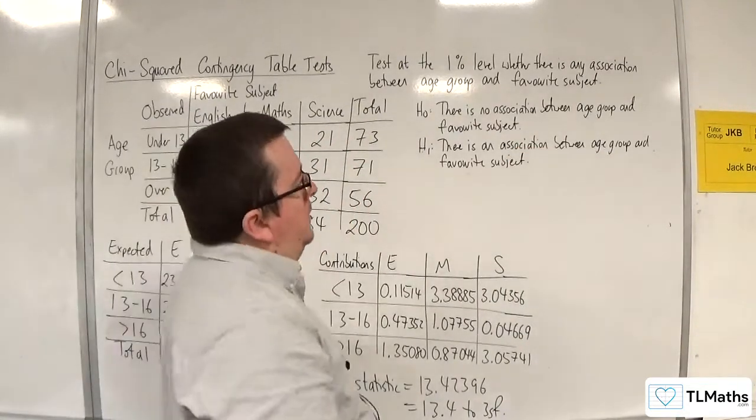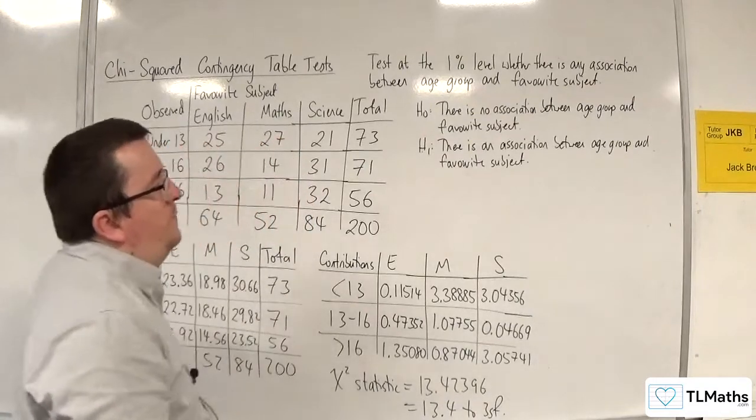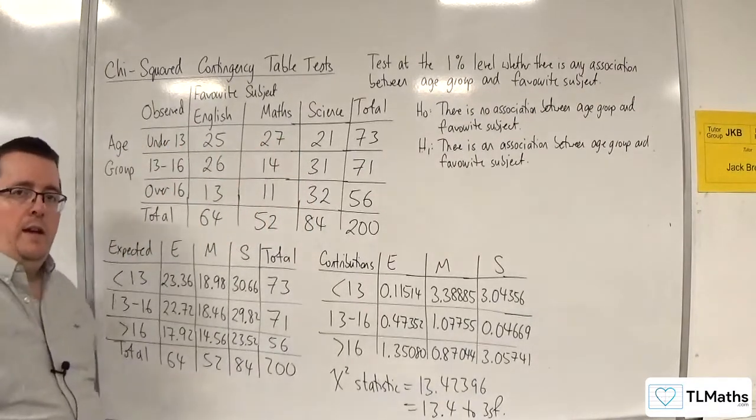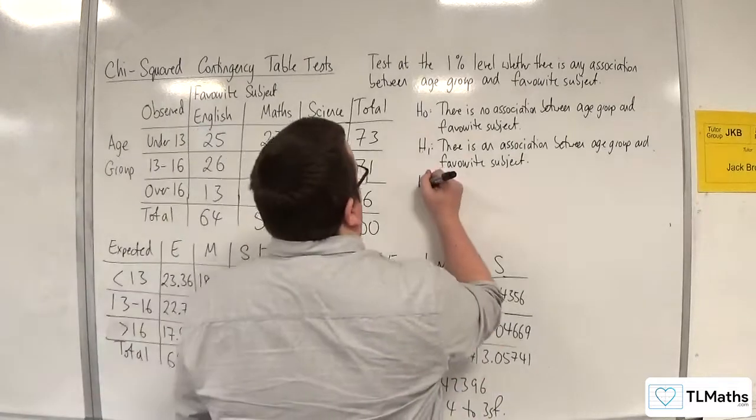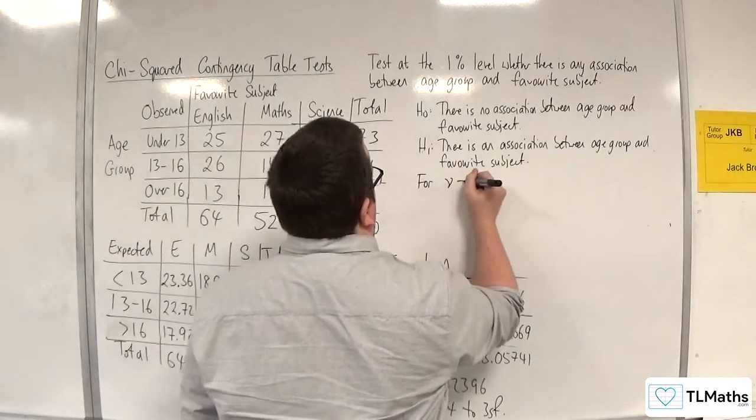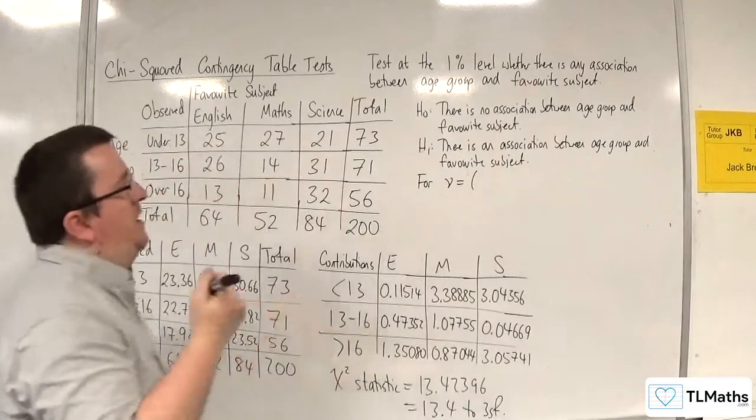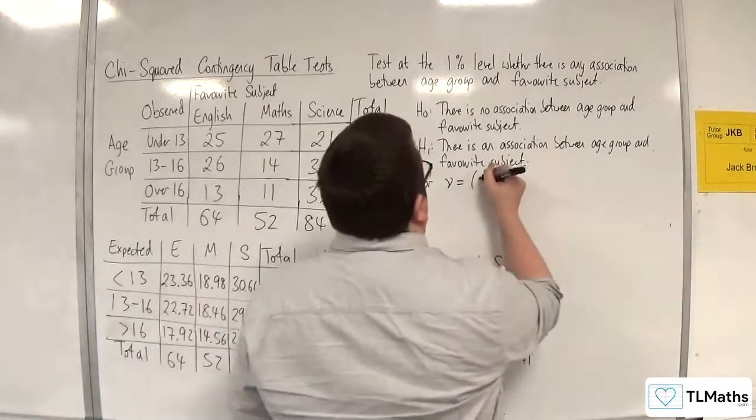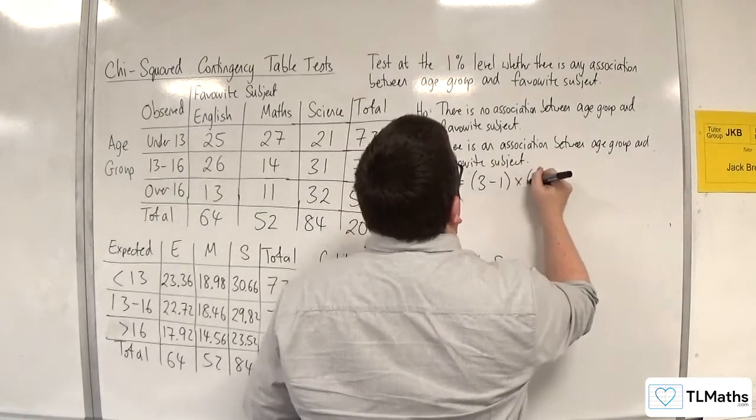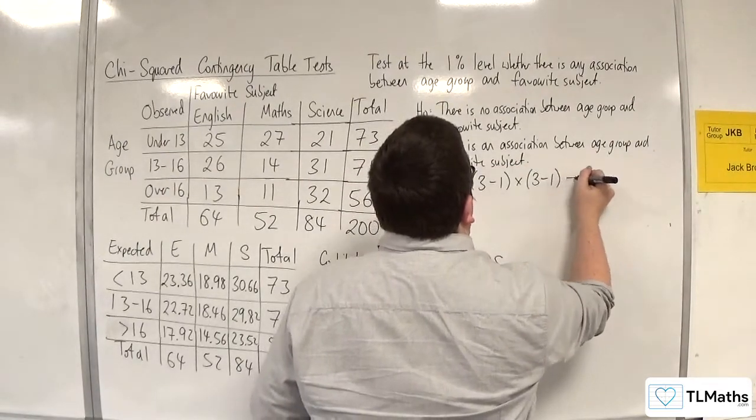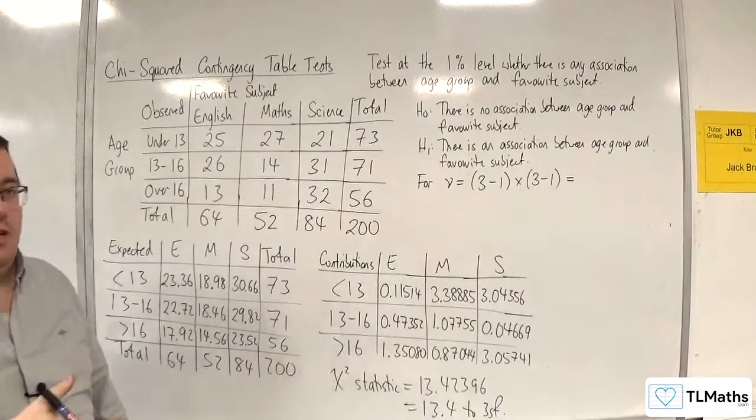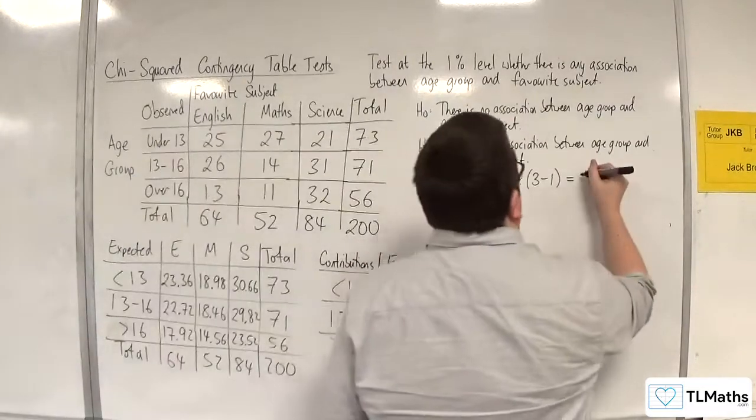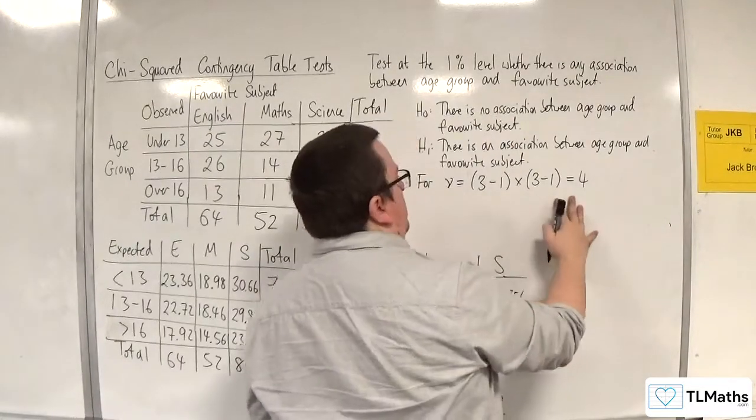So we've got that in place. Now, we need to calculate the number of degrees of freedom, nu. So, for nu equals, we've got the number of rows take away 1, so that's 3 take away 1, times by the number of columns take away 1, so 3 take away 1. So we get 2 times 2, so 4. So that's my degrees of freedom.